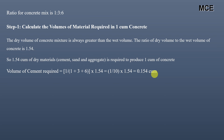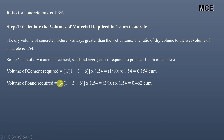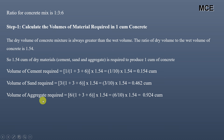Volume of sand = (3 ÷ (1+3+6)) × 1.54 = 3/10 × 1.54 = 0.462 cubic meters of sand required to make one cubic meter of wet concrete. Volume of aggregate = (6 ÷ (1+3+6)) × 1.54 = 6/10 × 1.54 = 0.924 cubic meters of aggregate required to make one cubic meter of wet concrete.